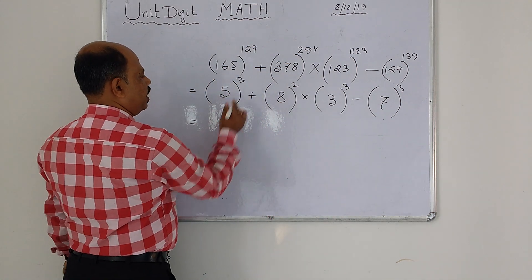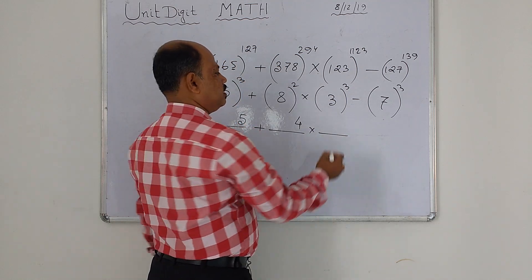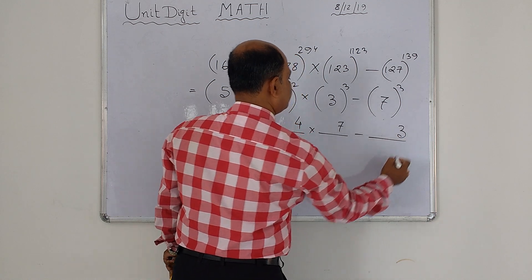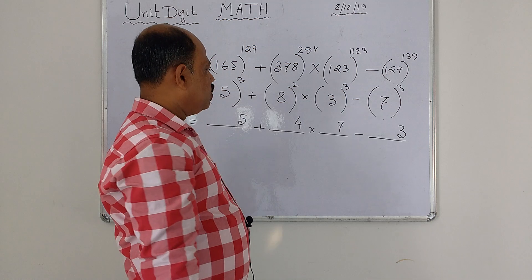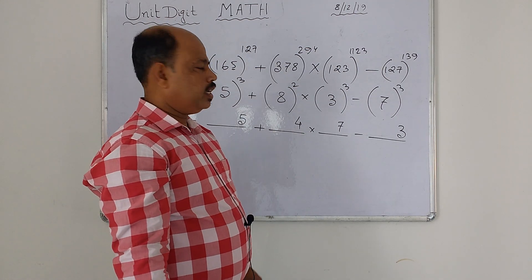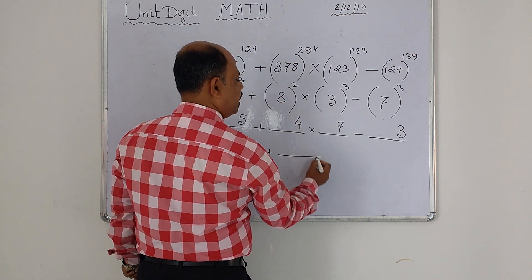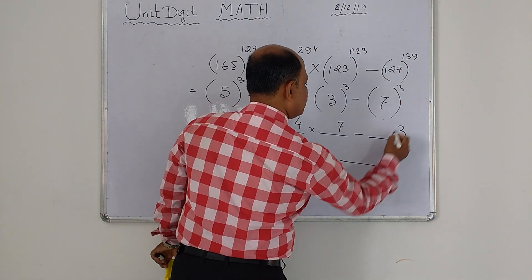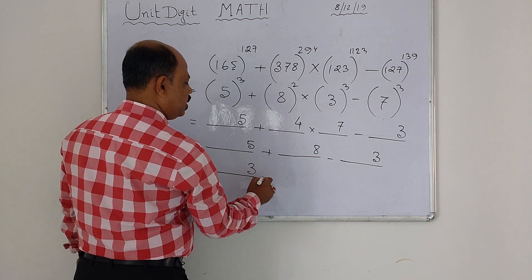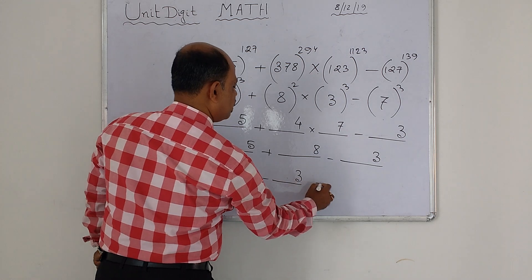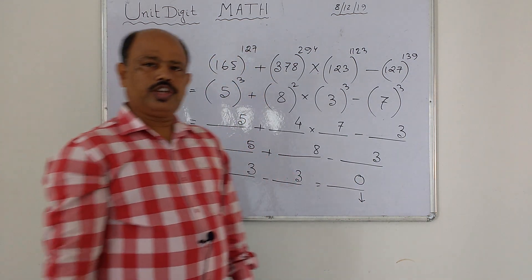Separately: 5 cubed means 125, unit place is 5. Eight squared means 64, unit place is 4. Three cubed means 27, unit place is 7. Minus seven cubed means 343, unit place is 3. There are three signs: plus, multiplication, and minus. Using BODMAS, first multiplication: 4 times 7 is 28, unit place is 8. Then plus: 8 and 5 is 13, unit place is 3. Then minus 3: 3 minus 3 is 0. So the unit place after calculation is 0.